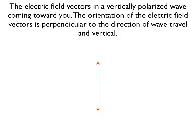Now imagine a vertically polarized wave coming straight towards your eye. The electric field vectors forming the crests and troughs would wiggle up and down vertically. The entire electric field stays in the same plane and that plane is oriented vertically. This is a vertically polarized wave.